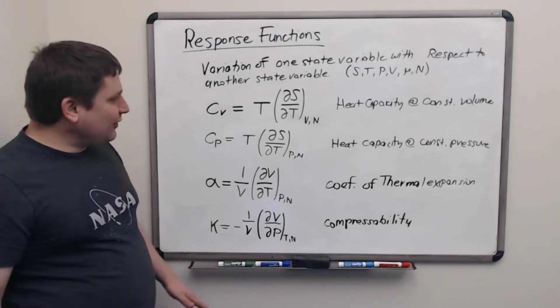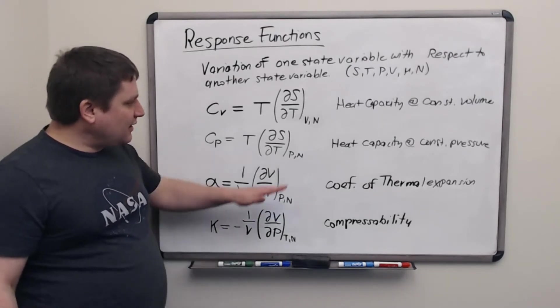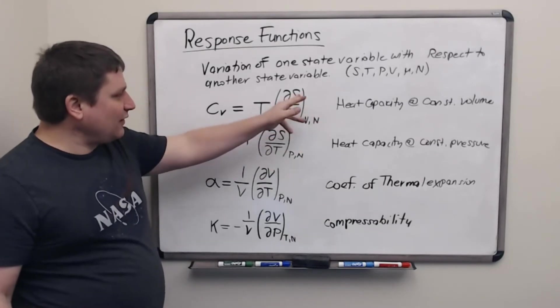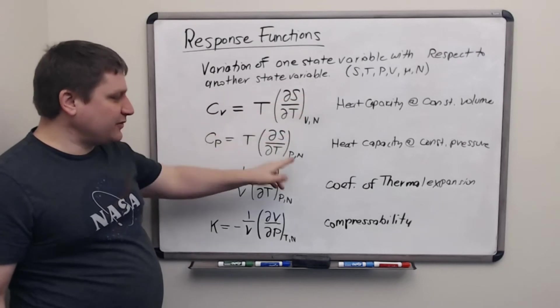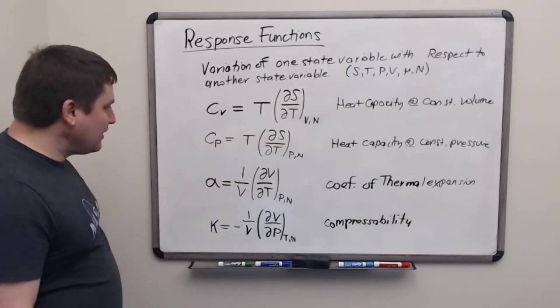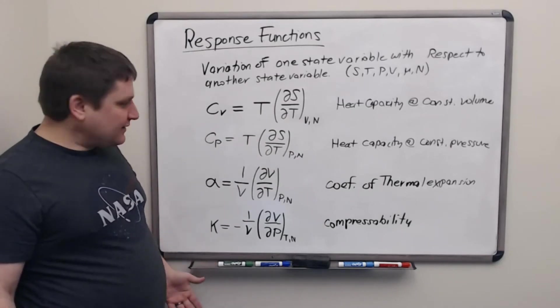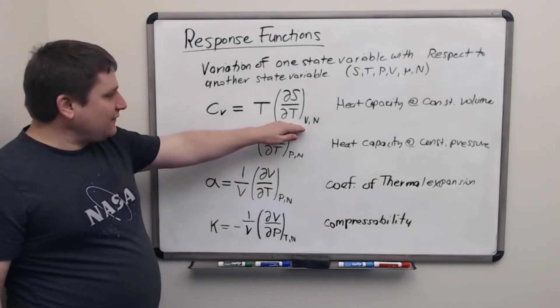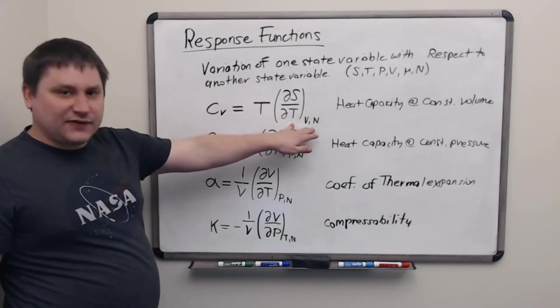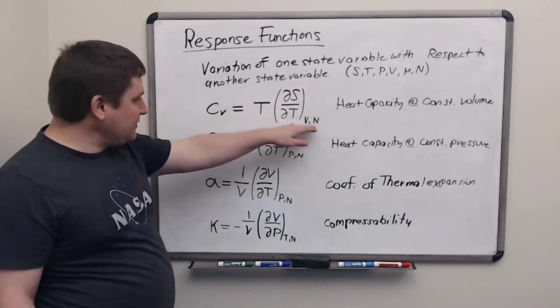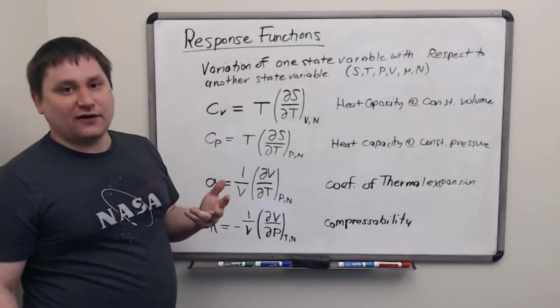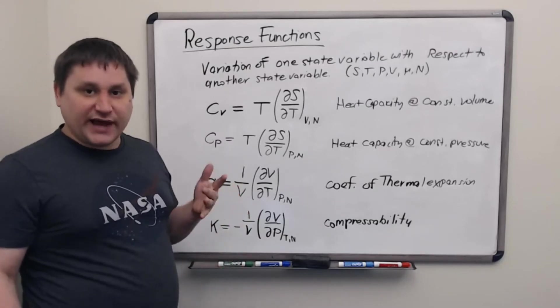These four response functions are called the standard response functions. Now notice what variables are involved here when something is varied. So both heat capacities involve changing the entropy by doing something, always changing the entropy by changing temperature. But what variables are held constant? Here we have a temperature variation while volume and number are held constant. And if we think what we would have to do to make this derivative work, we would have to express entropy in terms of T, V, and N. Those are the set of natural variables for the Helmholtz free energy.